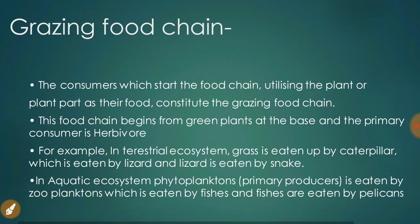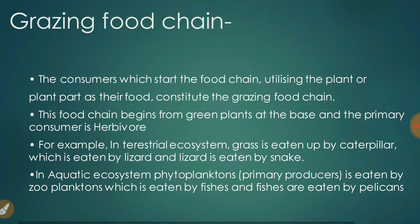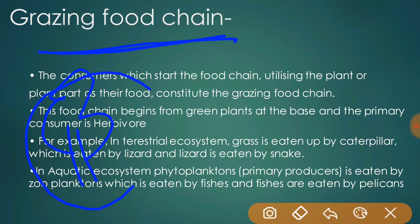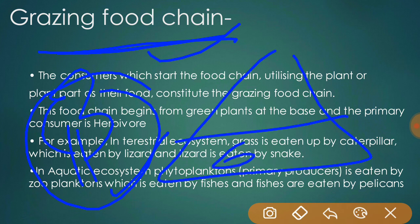There are two types of food chains. The first is the grazing food chain. In a grazing food chain, consumers start the chain by utilizing the plant or plant parts. This food chain begins from green plants at the base.